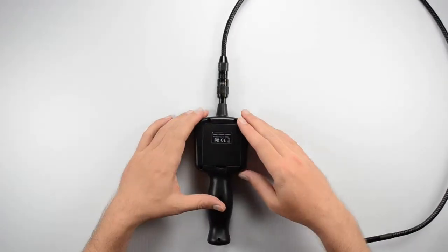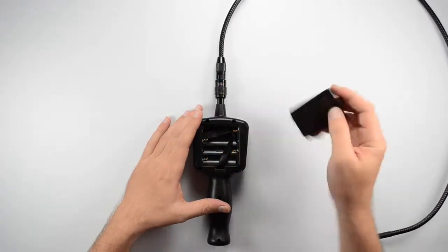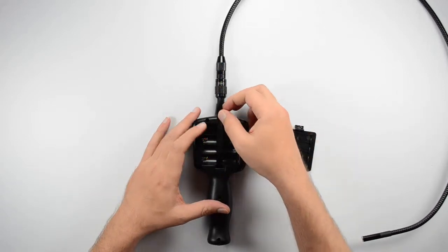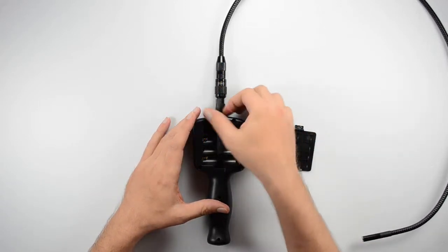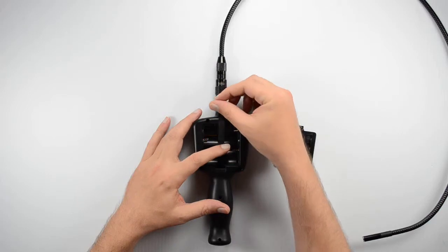We also want to flip the unit over here on the back and we've got our battery compartment here. We will need four AA batteries to go in this. As you can see it's also got this little ribbon here to help us remove those batteries.